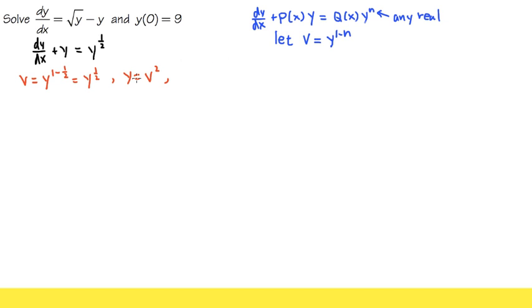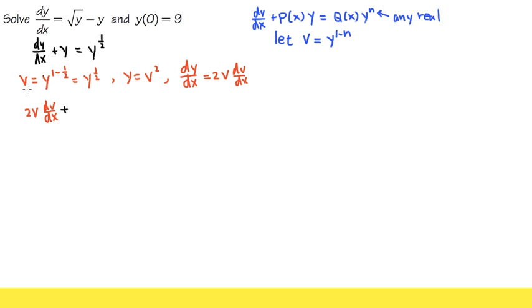We differentiate both sides with respect to x. So dy/dx equals 2v times dv/dx, by the chain rule since phi is a function of x. Now we plug this into our equation: 2v dv/dx plus v squared equals y to the 1/2, which is just v.